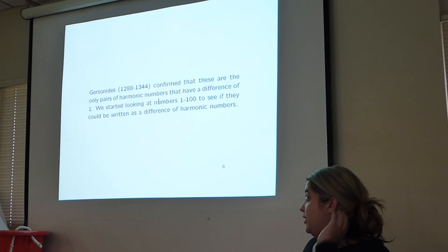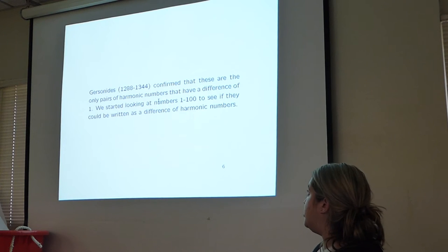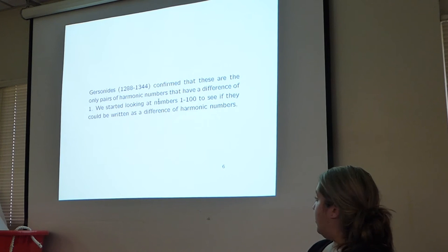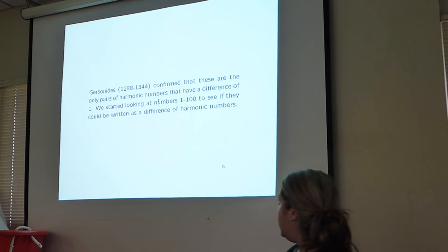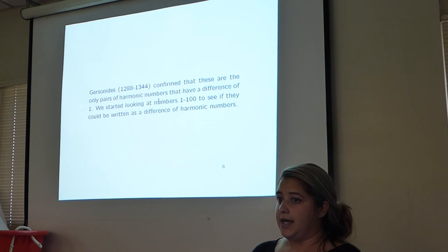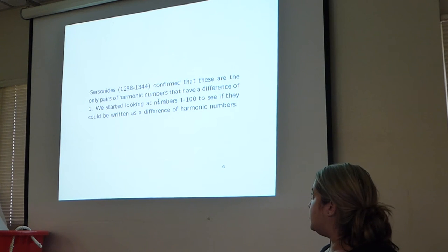Vitri didn't know that these were the only 4 pairs of harmonic numbers, but just a lot of these confirmed that they were. We actually have a proof of this in our paper that he proved that these were the only 4 pairs of consecutive harmonic numbers. We started looking at numbers 1 through 100, and said, can all of these numbers be written as a difference of harmonic numbers, besides just 1?